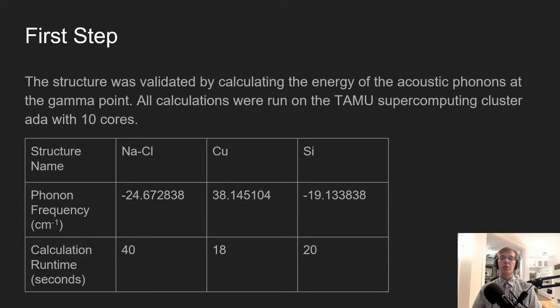The first step that we did was to run a phonon calculation for the gamma points on the Texas A&M supercomputing cluster Eos with 10 computing cores. We did the calculation in under a minute for all of them since we were concerned about the calculation time being too long, but they were all at a low computation cost. The phonon frequencies are all around zero.